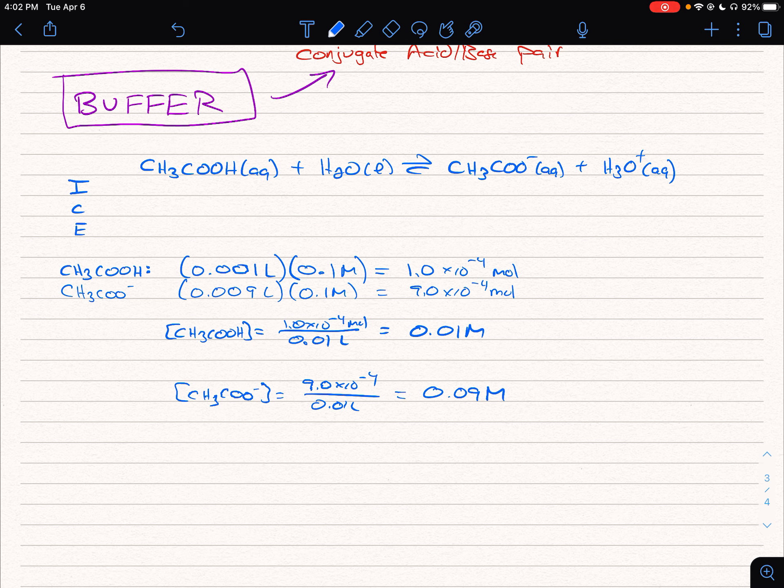Those values we can plug into our ICE table. So what we're seeing is initially we have 0.01 M acetic acid, and initially we have 0.09 M acetate.